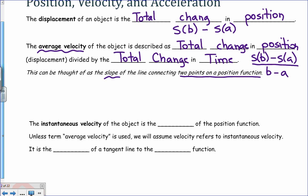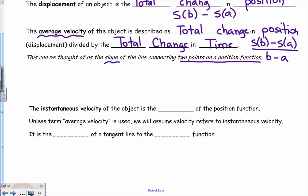Instantaneous velocity of an object is the derivative of the position function. So, unless we use the actual words average velocity, then we will assume in a problem, when they refer to velocity, it's going to be instantaneous velocity. So it is the slope of the tangent line to the position function. Instantaneous velocity is the slope of the tangent line.